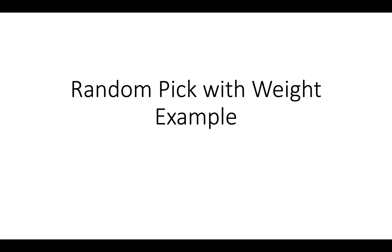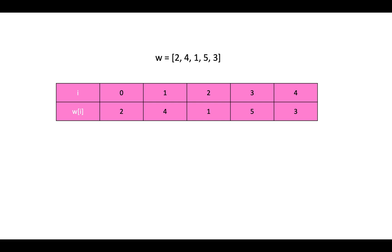Hello everyone. I'm here to give you a simple example of the LeetCode problem 'Random Pick with Weight.' Suppose we have an input array like this. For index 0 the weight is 2, for index 1 the weight is 4, and for index 2 the weight is 1, and so on. Basically, we need to randomly pick an index by its weight.